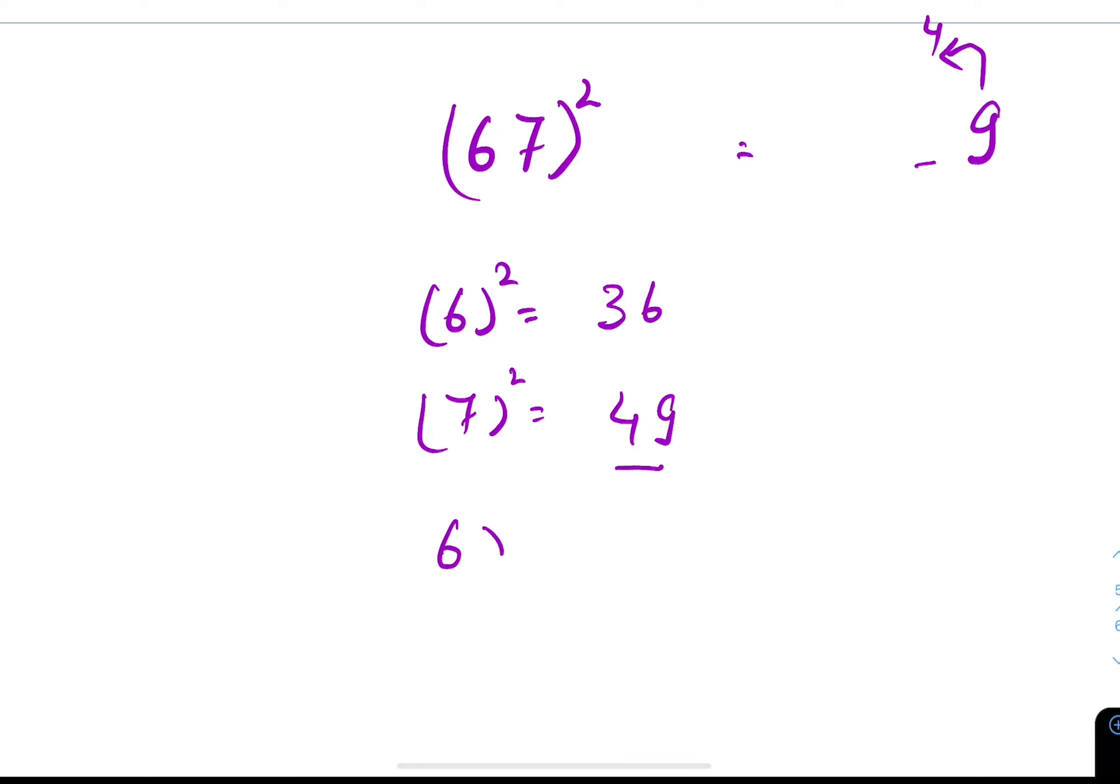Now 6 into 7 into 2. 6 into 7 is 42. 42 into 2, 84. 84 plus 4 is 88 and 8 will be carry over here. 8 plus 36 is 44. 4489.